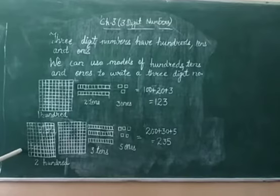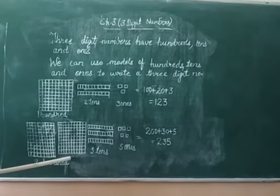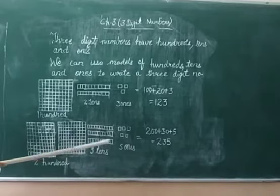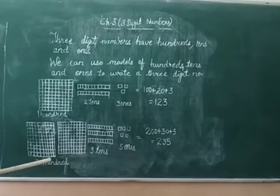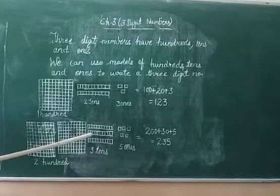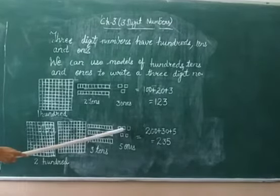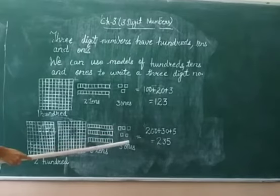Second example is, in this representation there are 2 hundreds, 3 tens, 1, 2, 3, 4, 5. 5 ones. 2 hundreds, 3 tens, 5 ones.